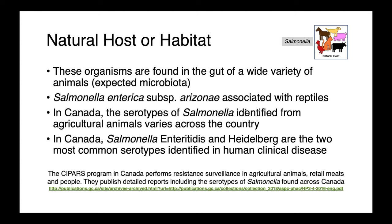We also see geographic variation — not only host relationships, but in different parts of the country. In Canada, we have different serotypes of salmonella identified from different agricultural animals. Salmonella serotype enteritidis and Heidelberg are the two most commonly identified in human clinical disease. Salmonella is routinely surveilled for antimicrobial resistance, performed by the CPARS program, or the Canadian Integrated Program for Antimicrobial Resistance Surveillance, done by the Public Health Agency of Canada.